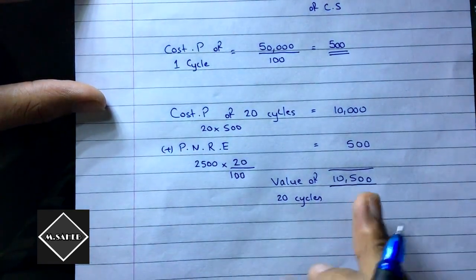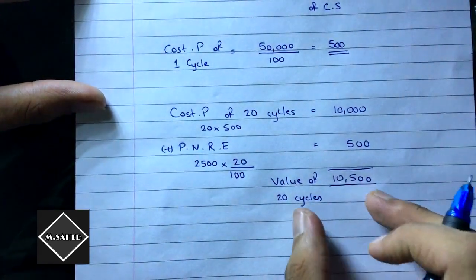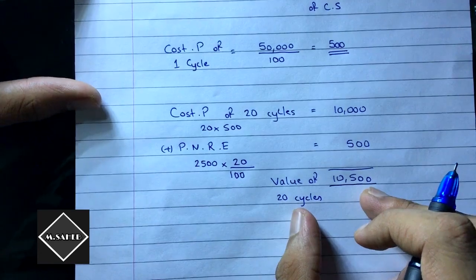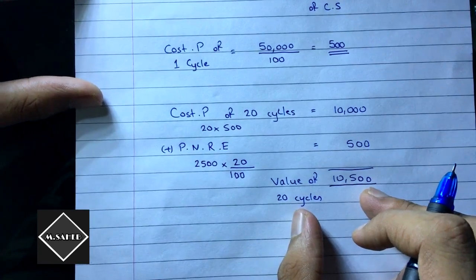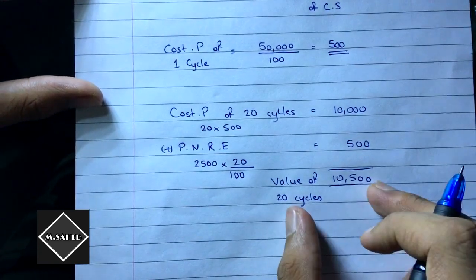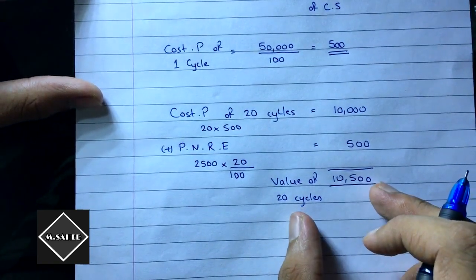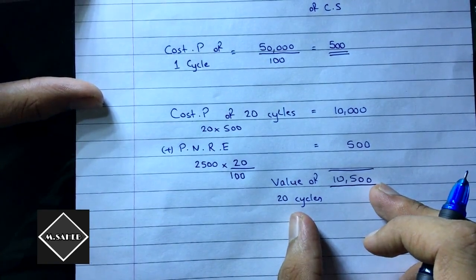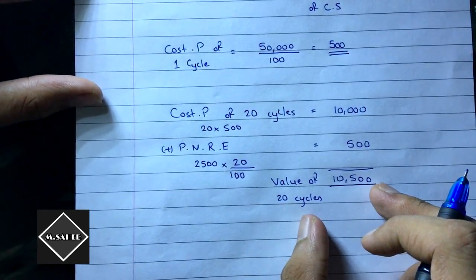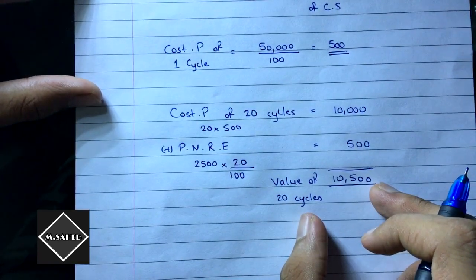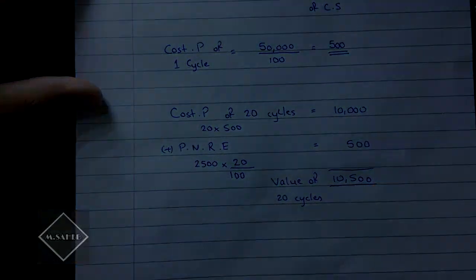We have found the value of the closing stock as rupees 10,500. This will be credited in the consignment account as 'by consignment stock.'